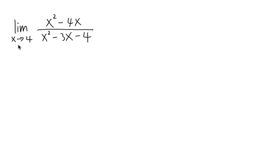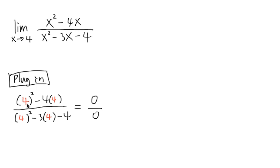The first thing we should do is plug in 4 into all the x and see what we get. We have 4 squared minus 4 times 4 over 4 squared minus 3 times 4 minus 4.